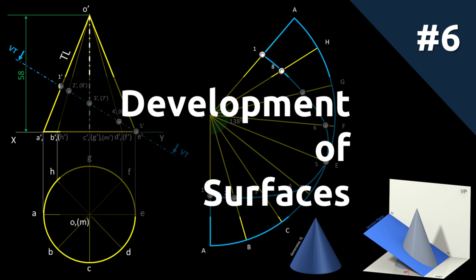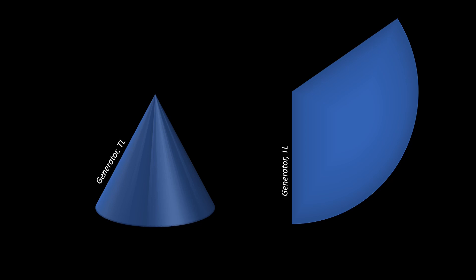In this session, we are going to look at development of a cone with the help of a problem. The developed pattern of the cone will be a sector of a circle with radius equal to the length of the generator of the cone. The subtended angle of the sector has to be found using the base circle radius and the length of the generator of the cone. We can discuss it later. Let's go for the problem.